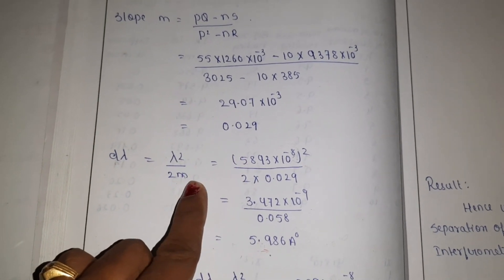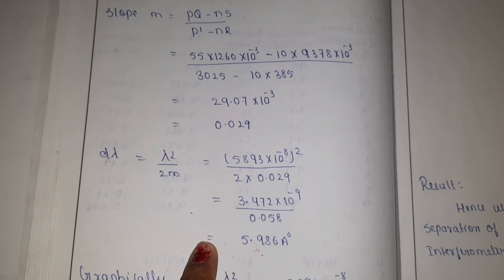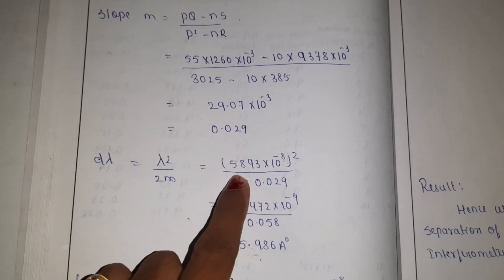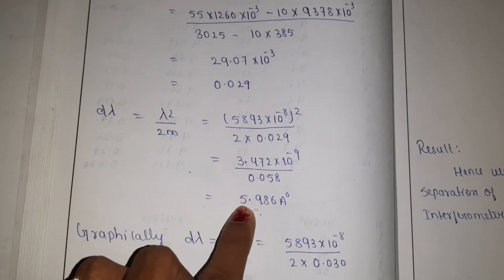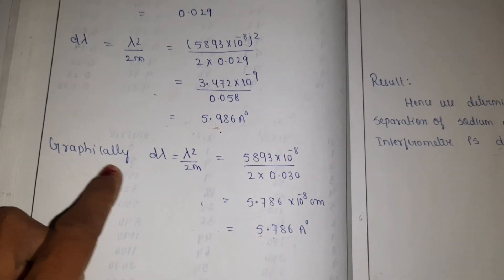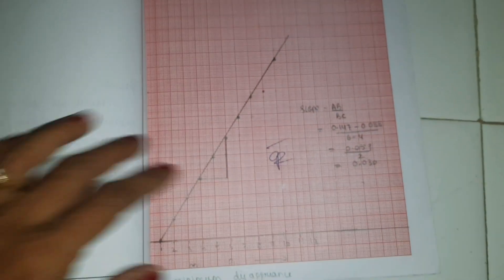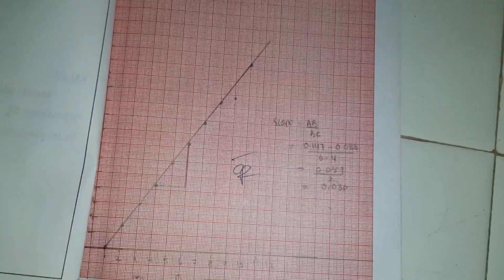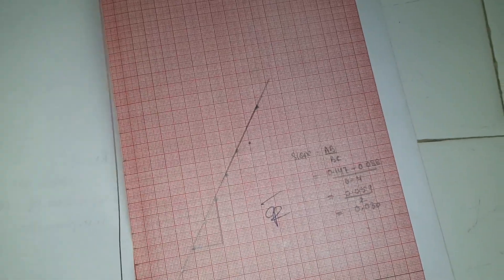Using the slope, calculate the shift in wavelength using the formula: delta-lambda equals lambda-squared divided by 2m, where the wavelength of sodium light is 5893 Å — it is a doublet. Put in the values of wavelength and slope to get the separation between the two wavelengths. Graphically, plot D versus N to get a slope of approximately 0.03, and use this slope for the calculation.